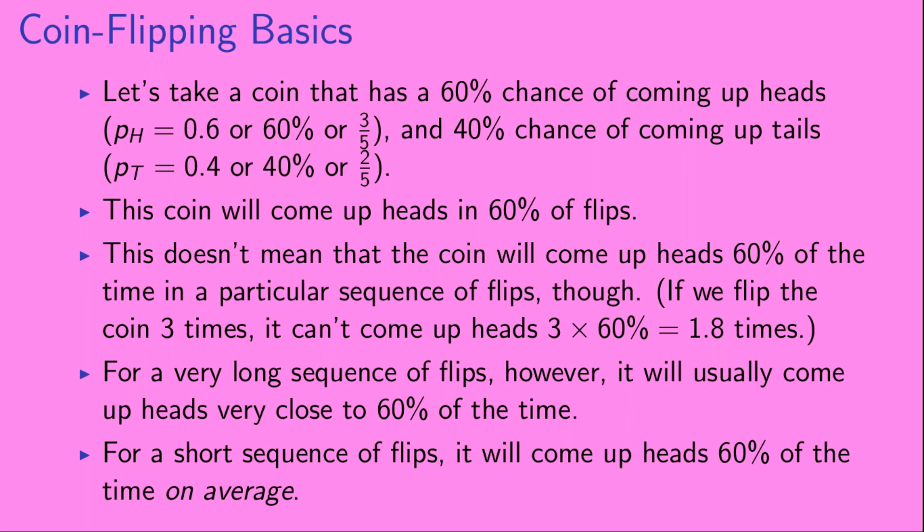Now this doesn't mean that the coin will come up heads exactly 60% of the time in a particular sequence of flips. For example, if we flip the coin three times, it can't come up heads exactly 60% of the time, as that would be 1.8 flips. However, for a very long sequence of flips, it will usually come up heads very close to 60% of the time, and for a short sequence of flips, it will come up heads 60% of the time on average.